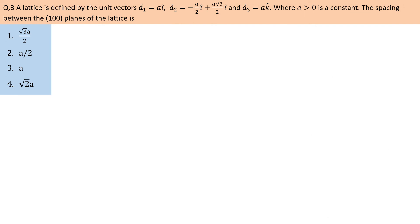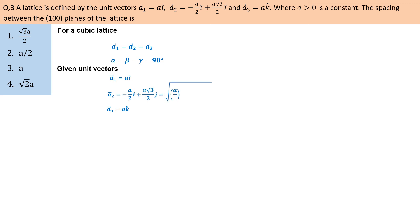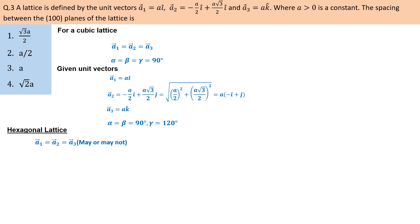A lattice is defined by unit vectors a1, a2, and a3, where a > 0 is a constant. The spacing between the (100) planes of the lattice is asked. The angle between a1 and a3 is 90 degrees, but the angle between a2 and a1 is 120 degrees. This is a property of a hexagonal lattice. Generally, for a hexagonal lattice, two unit vectors have the same magnitude and the angle between them is fixed at 120 degrees.